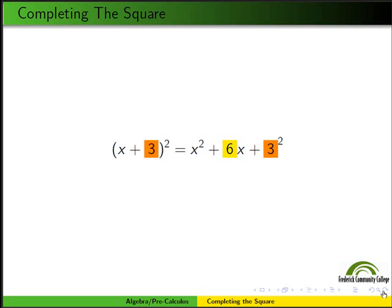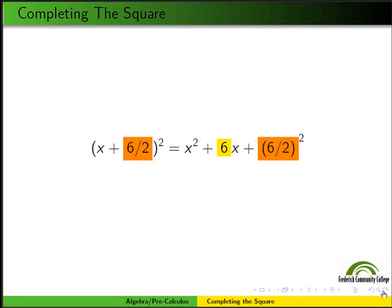Surely you'd say that 3 is half of 6. So we could rewrite these as (x + 6/2)² = x² + 6x + (6/2)². We will find that this is always the relationship when dealing with perfect squares.